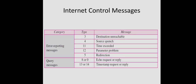All ICMP messages can be broadly categorized into two categories: first, error reporting, and second, queries. ICMP does not perform error correction - it just reports the error to the source that generated the packet, and error correction is left to higher-level protocols in the transport layer. Under error reporting we have: destination unreachable, source quench, time exceeded, parameter problem, and redirection. Under query we have echo request/reply and timestamp request/reply. Each message type is assigned a type value.